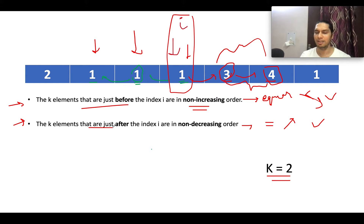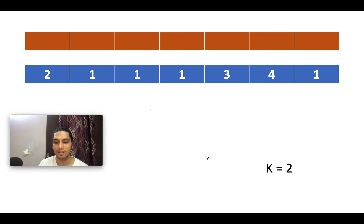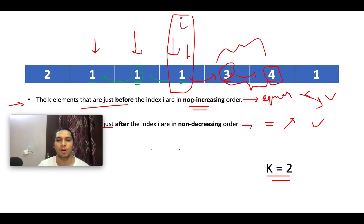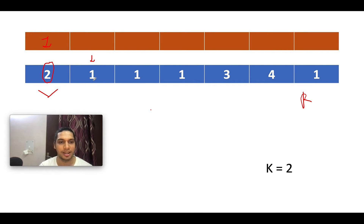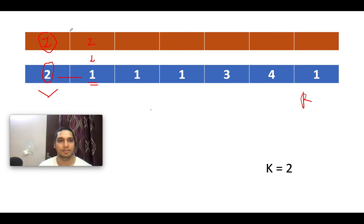We divide the problem into two parts. For the first constraint, we identify the count of elements occurring in non-increasing order moving left to right. Starting iteration: the first element is 2 — no element to its left, so count is set to 1. The next element is 1, which is decreasing compared to 2 (non-increasing), so we add 1 to the previous count, giving 2.